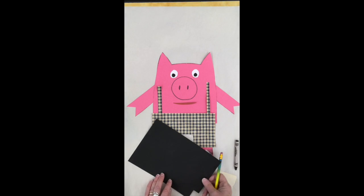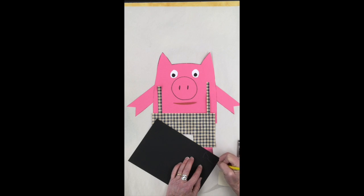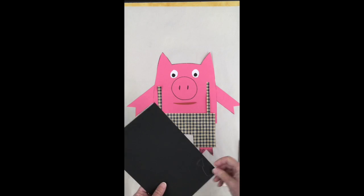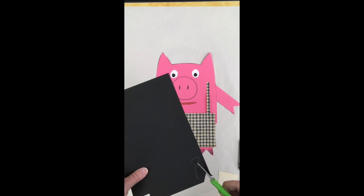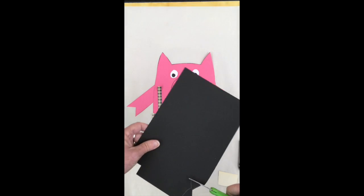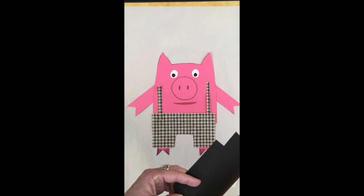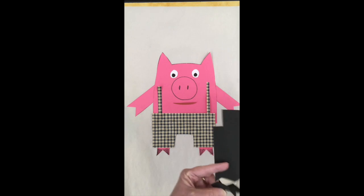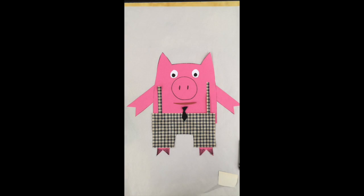I think I'll make my pig fancy. And I'll draw a necktie, which I know you can't see because the paper is so dark. But I'll cut out a necktie. Could be a bow tie. And now he looks fancy.